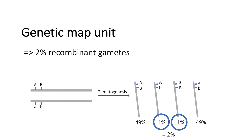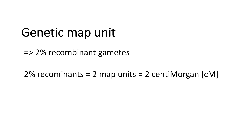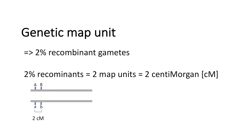We take the same example to define a genetic map unit. In our example we have 2% recombinant gametes. 2% recombinants means 2 map units, which also means 2 centimorgans. Centimorgans is the unit to define genetic distance. From our example, in the case of only 2% recombinants, the A and the B gene are 2 centimorgans distant from each other.